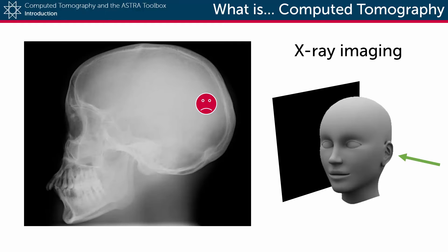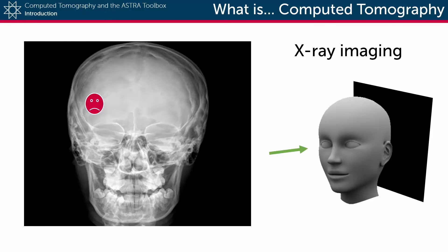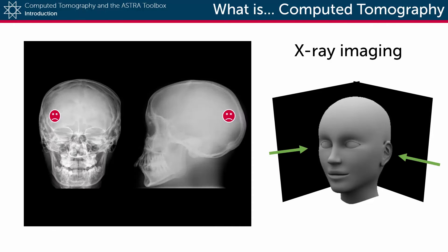If you had taken the X-ray image not from the side but from the front, then you could see on which side the tumor lies, but not whether it is near the front or near the back. So only by combining the information from two X-ray projections do you get a fairly accurate estimation of the position of the tumor.